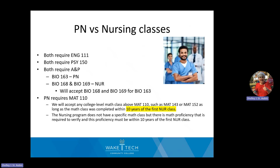If you're not sure which program you're interested in, or you want to apply to both practical nursing and nursing, you can. They're very similar in their general education courses. Both programs require English 111, psychology 150 general psychology, and anatomy and physiology. For practical nursing, it is a five-credit-hour course — Biology 163 — covering the entire body system in one semester. Nursing has eight credit hours for anatomy and physiology: ANP 1 (Biology 168) and ANP 2 (Biology 169).